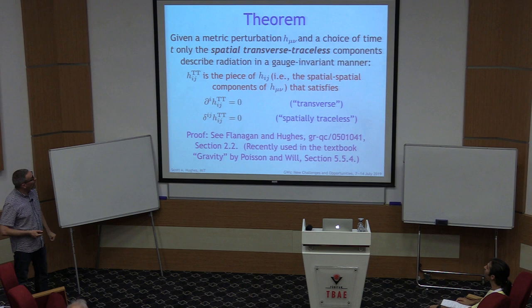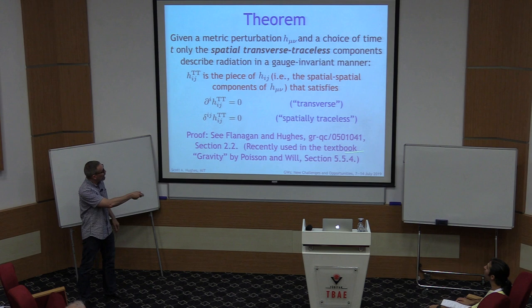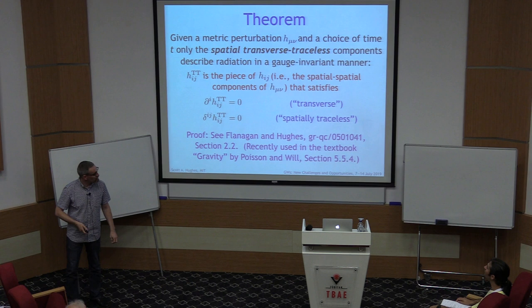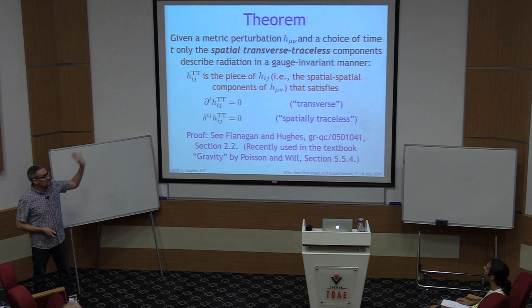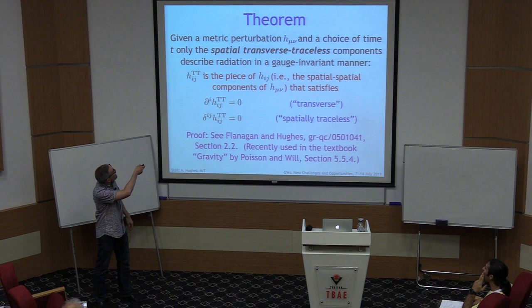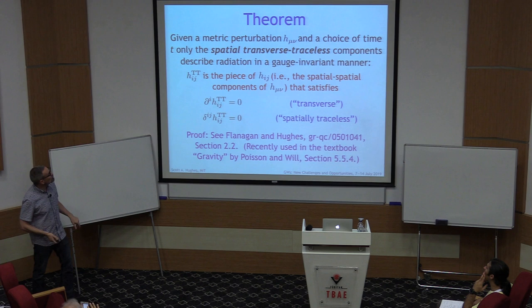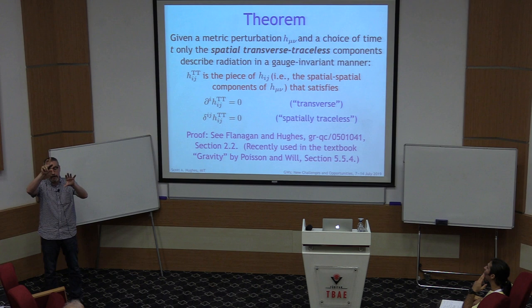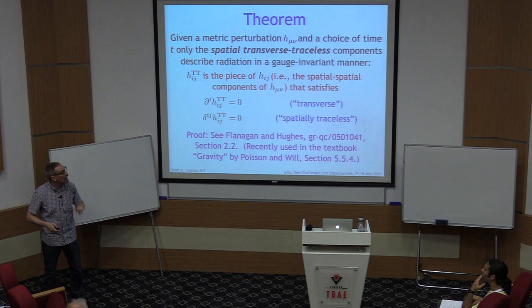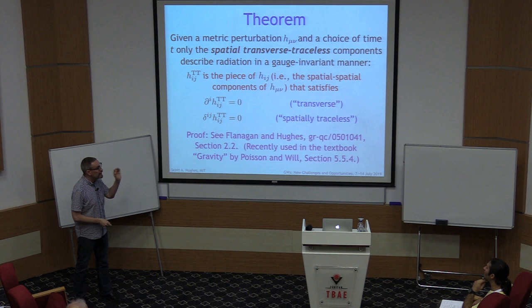The lesson for gravitational radiation is that we need to be careful: when given some H-mu-nu, we must understand what the actual radiative degrees of freedom are versus what might just be gauge artifacts. There is a theorem that helps us. If I give you a metric perturbation and tell you what time coordinate I'm using, then only the spatial transverse traceless components of H-mu-nu describe radiation in a gauge-invariant manner.